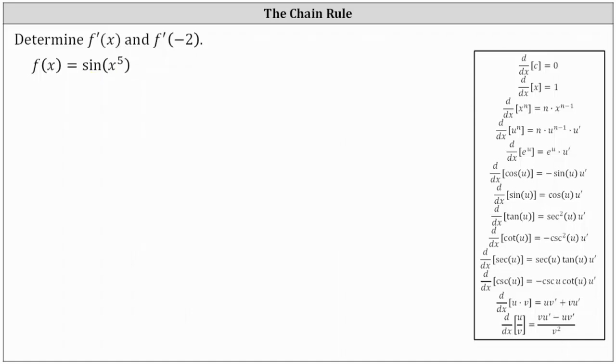Notice how f(x) is a composite function where the inner function, often referred to as u, is equal to x^5. So we have u = x^5.